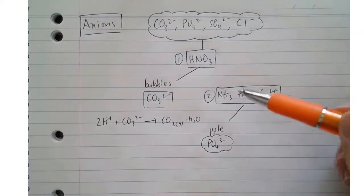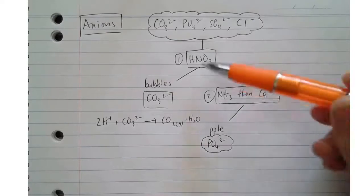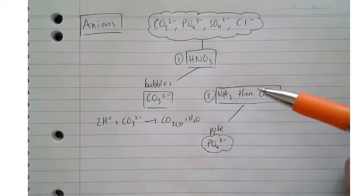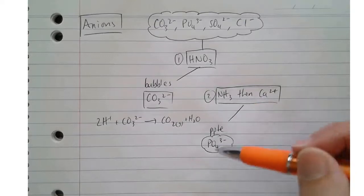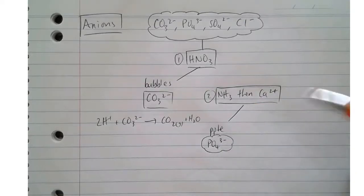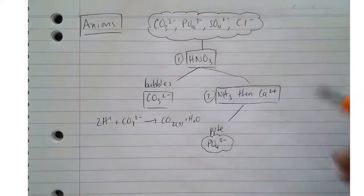Now the reason that we neutralise it is that we want to make sure that there's no acid left, but also the acidity of the solution when we add the calcium will affect whether some things will be soluble and some things will be insoluble. When we've made it neutral, calcium phosphate is insoluble, so that's what we're kind of looking for.